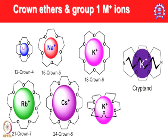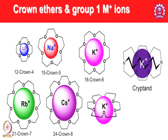Alkali metal cations can be stabilized by crown ethers of the appropriate size. To encapsulate lithium, a smaller crown ether — 12-crown-4 — is used. Sodium requires 15-crown-5, potassium can comfortably use 18-crown-6, rubidium (larger coordination number) uses 21-crown-7, and cesium (the largest alkali metal) uses 24-crown-8. Cryptands can also encapsulate these cations similarly.